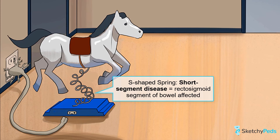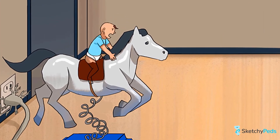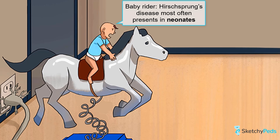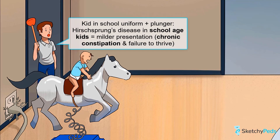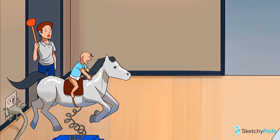Understandably, the more bowel affected, the worse the prognosis. Given that these babies have an obstructed bowel at birth, you can expect to see a vast majority of cases in neonates — which is why this daredevil baby is on the horse spring ride he is way too young for. Where are his parents? Only about 10% of cases are diagnosed in kids older than 3 years of age, with school-age kids often having a milder presentation with chronic constipation and failure to thrive — represented by this school-age kid standing in front of the bathroom with a plunger, asking his parents for help.